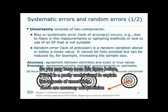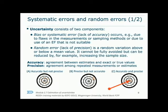Two key concepts are accuracy and precision. Accuracy is defined as the agreement between the estimates and the true values. If something is systematically inaccurate — meaning the mean of the estimates deviates consistently from the mean of the true values — then it is said to be biased. This would be the result of flaws in the measurement or sampling methodologies.